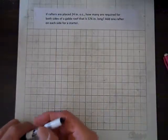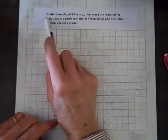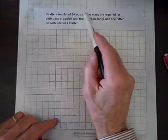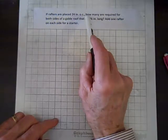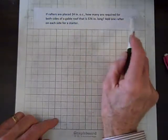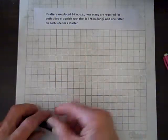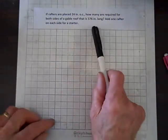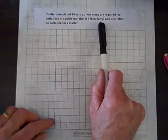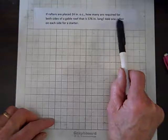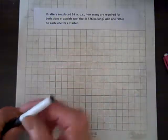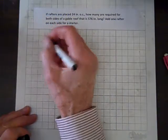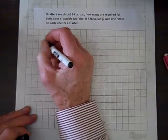Well, what follows multiplication, division, and that's what we have. So, if rafters are placed 24 inches on center, that's what OC means, how many are required for both sides of a gable roof that is 576 inches long? Add one rafter on each side for a starter. So, you know, we have rafters on both sides of the roof, center line. And so, we have to start with two rafters, one on each side, and that's what they mean there.